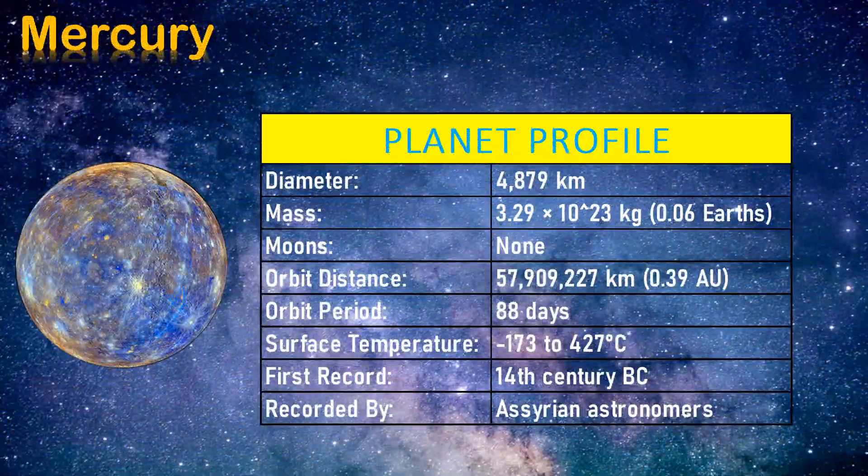Now, just as we all have a profile with details about a person, similarly every planet has a profile. So let's look at the profile of planet Mercury. The diameter of Mercury is 4,879 kilometers. The mass, that is weight, is 3.29 into 10 raised to 23 kilograms. It has no moons.